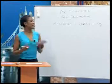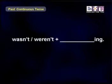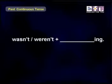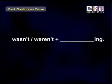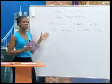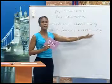The past continuous, or past progressive, tense is used to express an activity that was happening at a point of time in the past. The form is: was or were + your simple verb form + -ing. The negative form would be: wasn't or weren't + your simple verb + -ing.